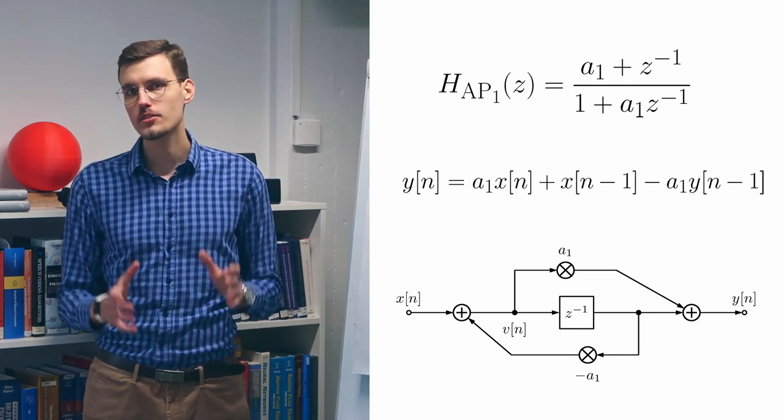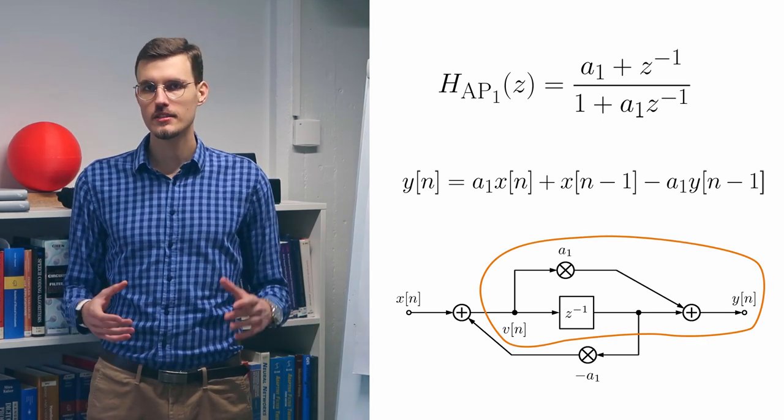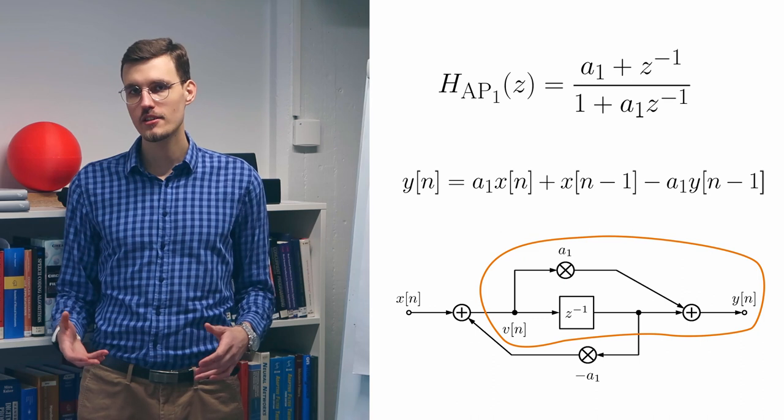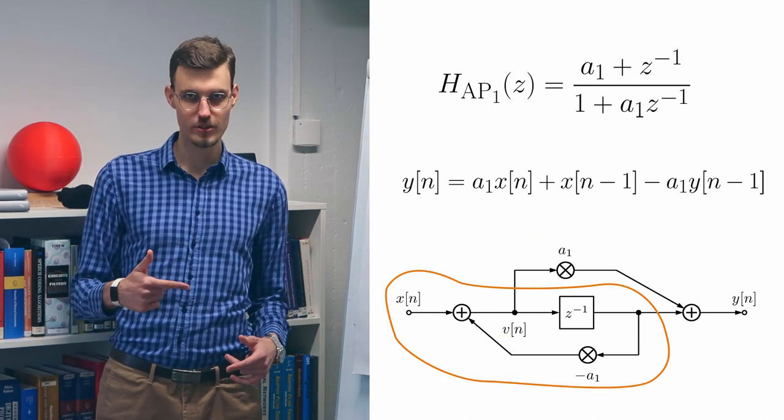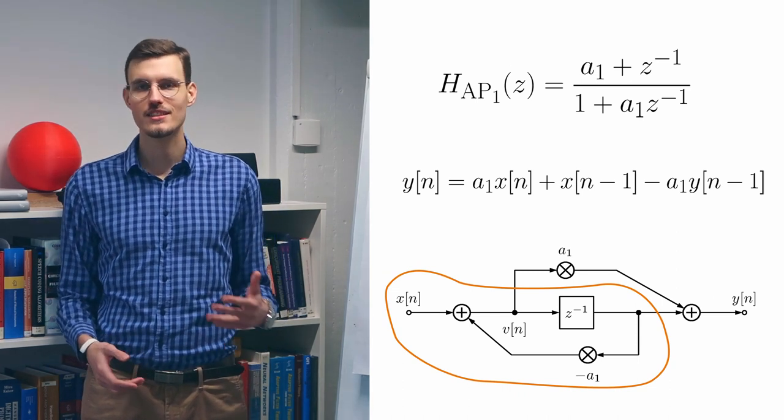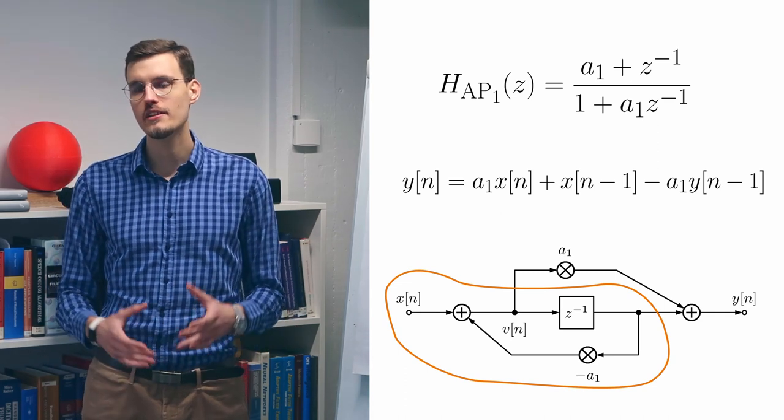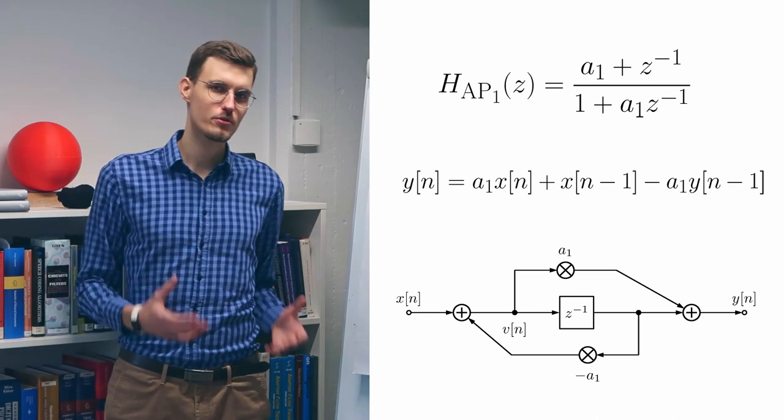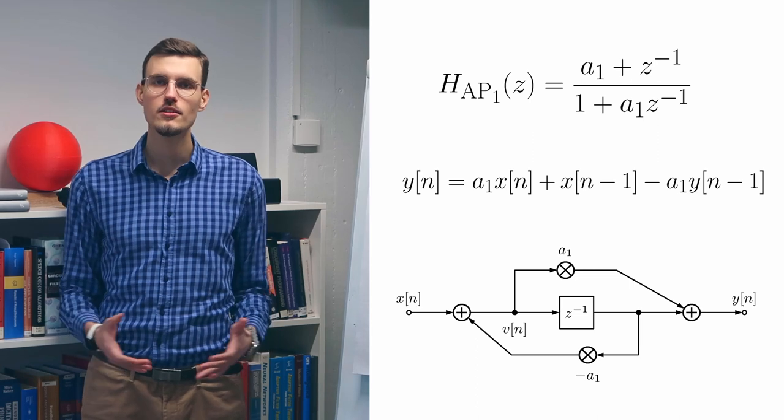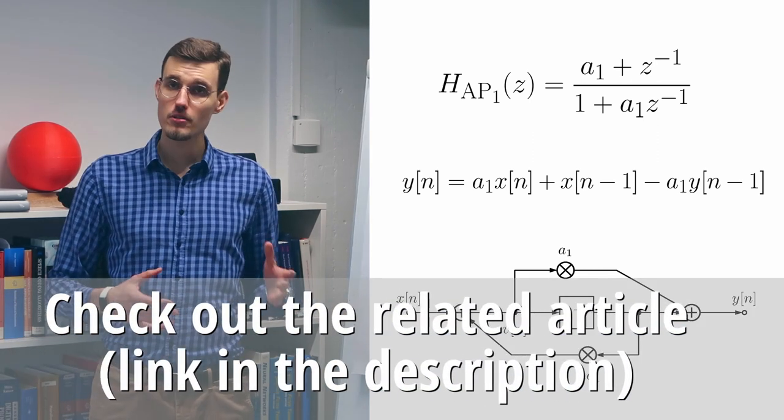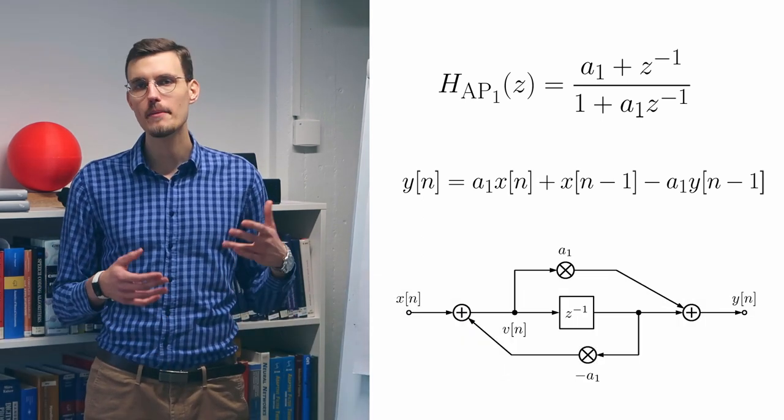As you can see, it consists of two comb filters. A feedforward comb filter sums a1 times v of n with v of n minus 1. A feedback comb filter subtracts a1 times v of n minus 1 from x of n to obtain v of n. It's such a powerful structure that I devoted much more space to its analysis in the article over at TheWolfSound.com. There you'll find a thorough analysis of the difference equation and also some implementational tips.